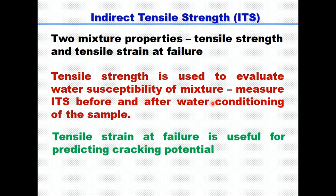There are two mix properties which are determined by these tests: one is tensile strength and tensile strength at failure. These are the properties we determine through ITS, indirect tensile strength. When ITS is determined before and after conditioning of the sample, it becomes tensile strength ratio, which is used to evaluate water susceptibility of mixtures.